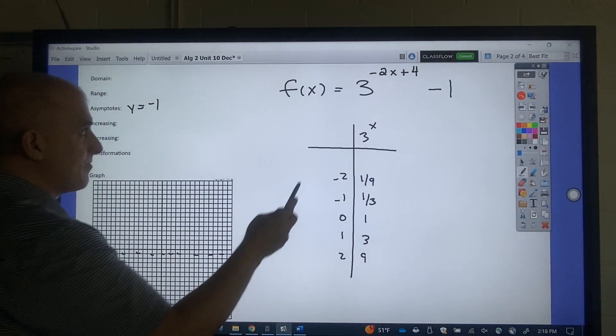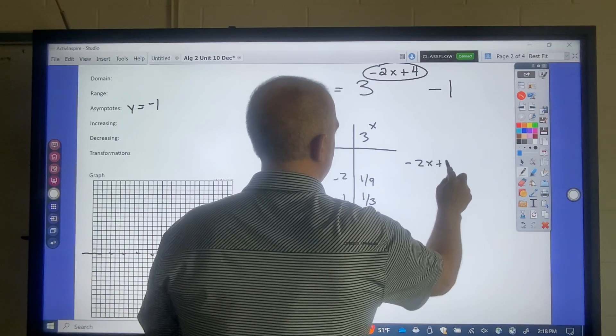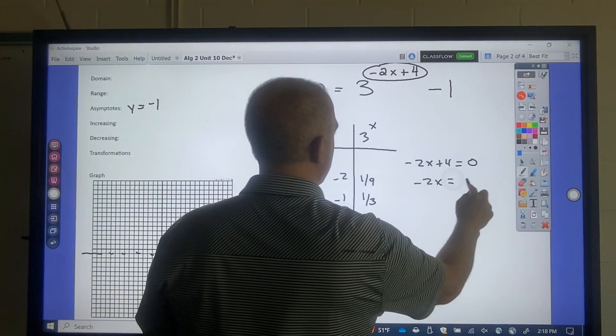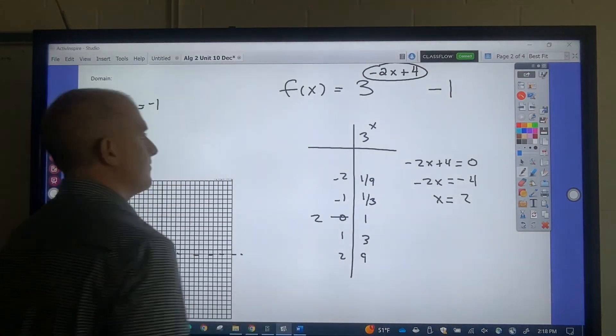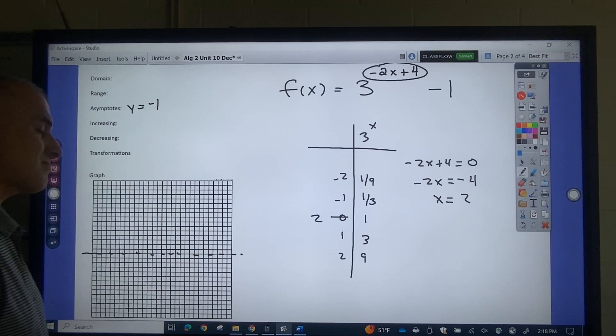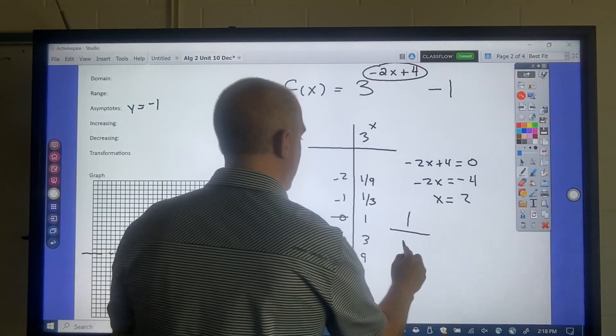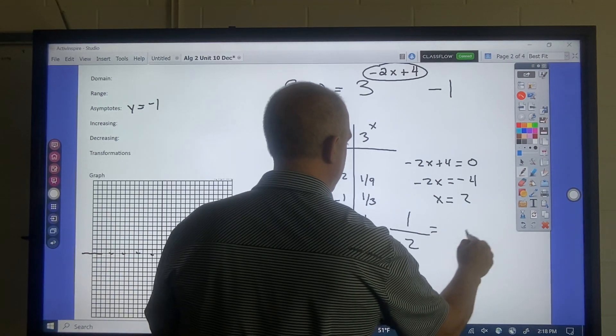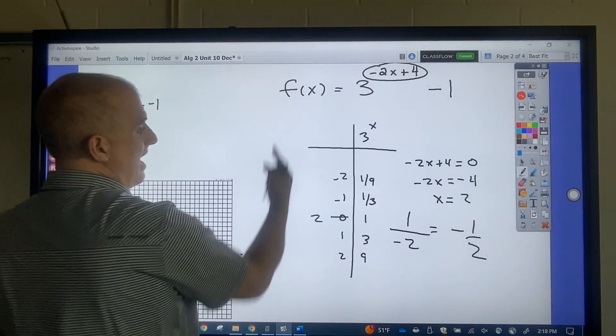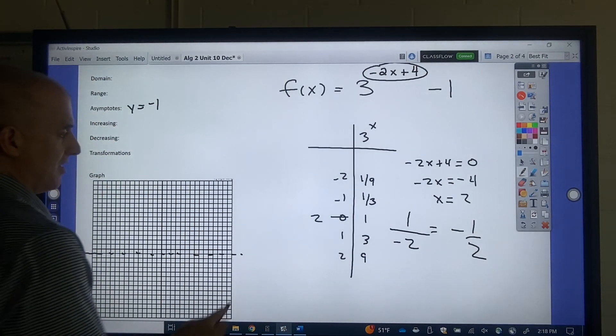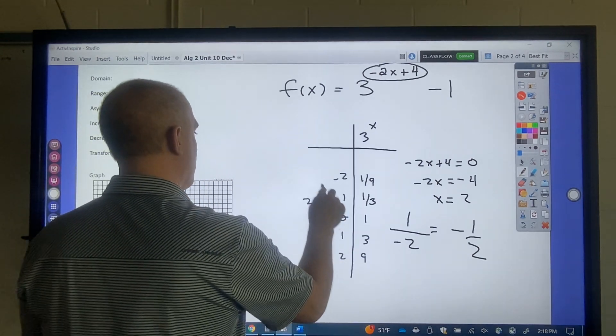Now what I want to do is I want to solve the inside. So that's negative 2x equals negative 4. That's x equals 2. Then what I want to do is I want to find the interval, which is 1 divided by the number attached to x, which is negative 1 half. So what I want to do is I'm going to subtract 1 half that way, add 1 half the other way. So this is going to be 1.5. This is going to be 1. This is going to be 2.5. This is going to be 3.